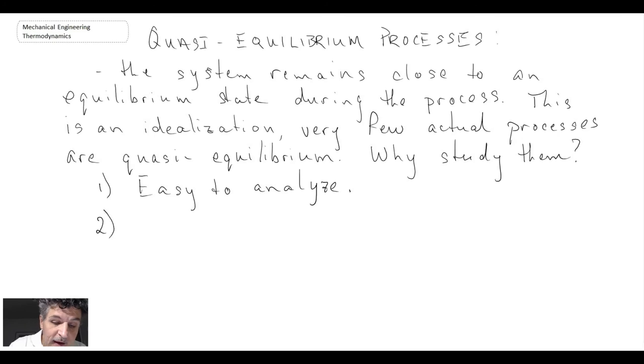The second is that work producing devices which is quite often what we'll be studying within thermodynamics produce the maximum amount of work in the quasi-equilibrium process state, and consequently when they're considered in quasi-equilibrium any real world systems would be a little under what we would get out of a quasi-equilibrium analysis. So this is basically the best case scenario that we're studying.